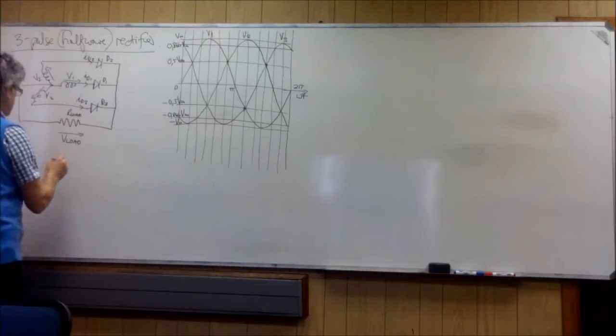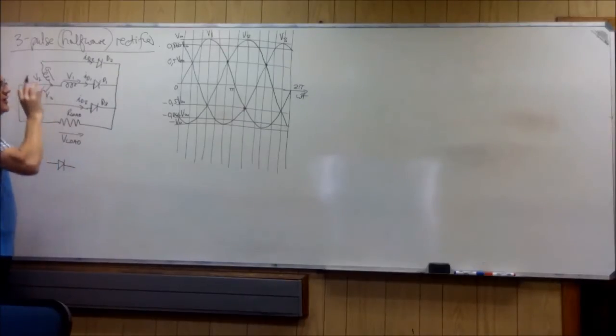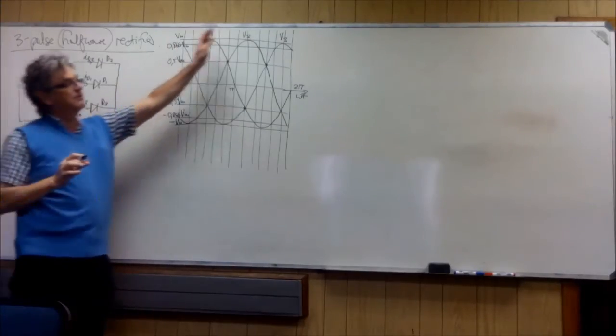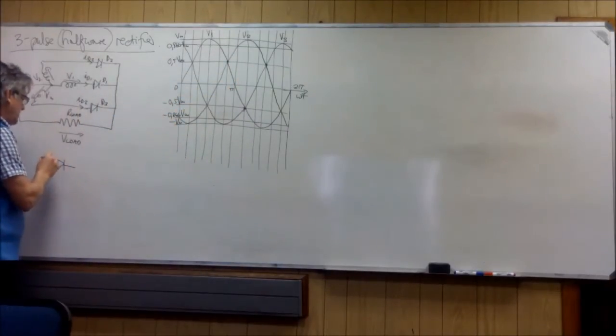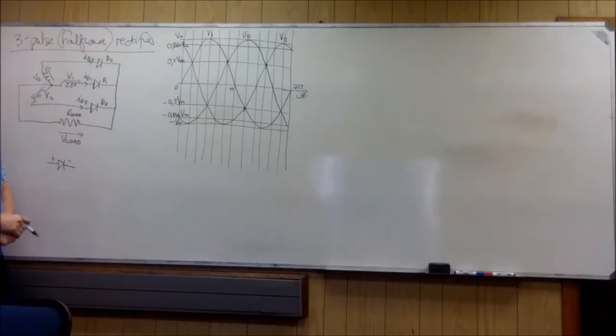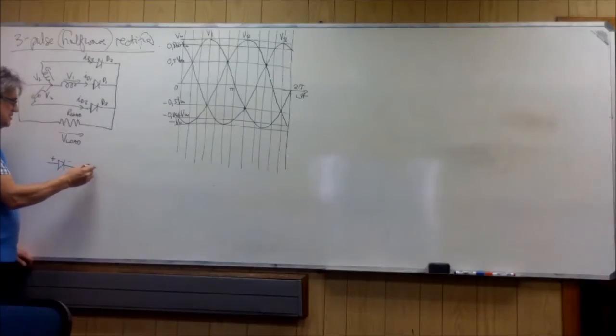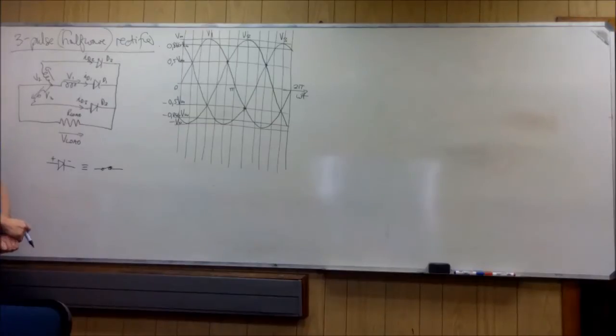One thing about the diode: you have to now look for, on the graph, look for the areas where the diode has got a positive on its anode and a negative on its cathode. When you have that situation, then this diode is equal to a switch that is closed. So we've got V1, we've got V2, and we've got V3. Where is V1 the most positive?